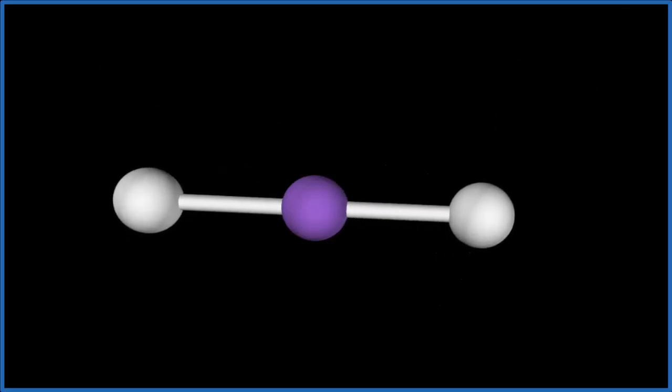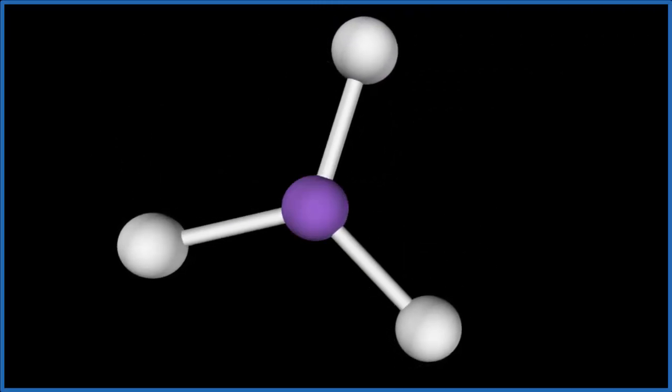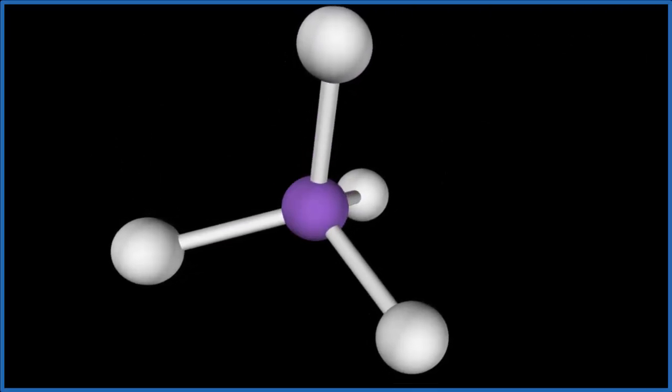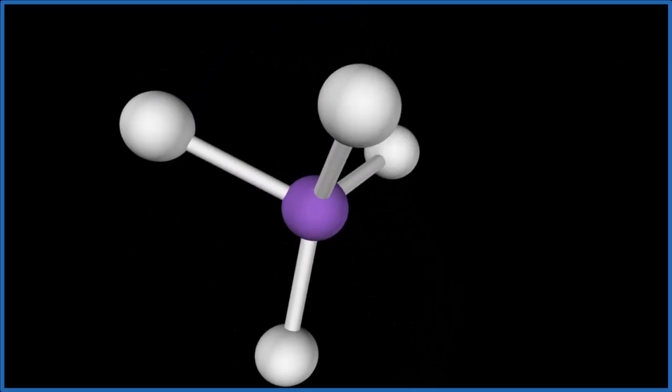So the purple will represent the Si atom, that central Si atom. We'll add four hydrogen atoms, one, two, you see they're spreading out, pushing away from each other, three, and then finally four, and that gives us a tetrahedral molecular geometry.